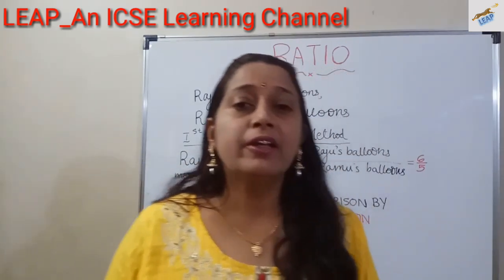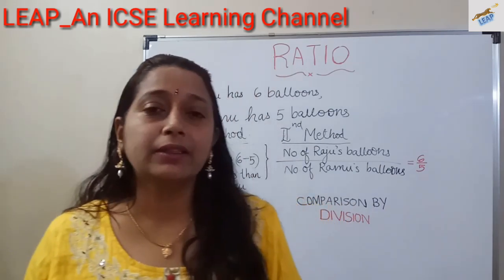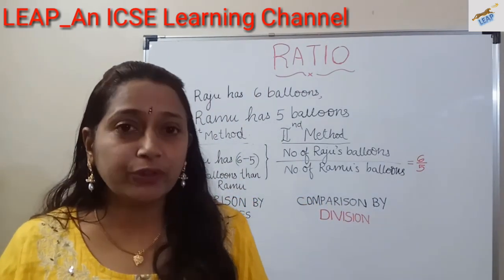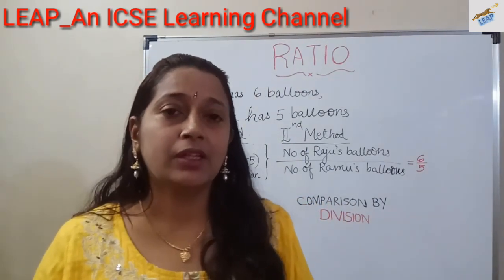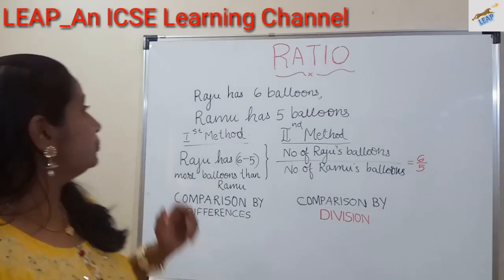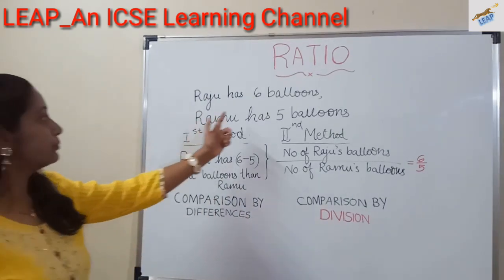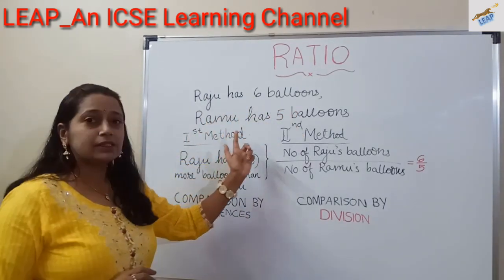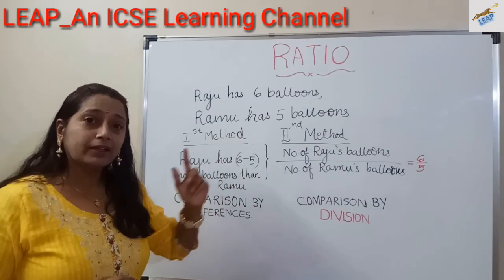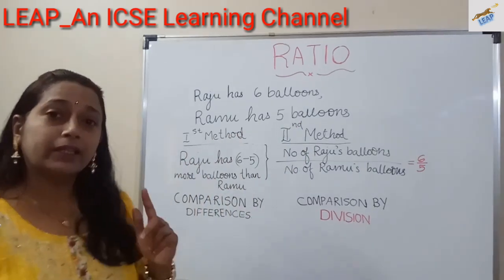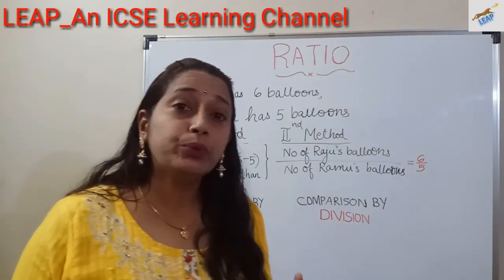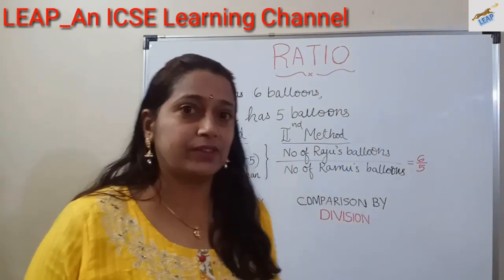For example, we can compare the heights of children, or the weight of students. Suppose Riaju has 6 balloons and Riaju has 5 balloons. We can compare the number of balloons in two different ways.